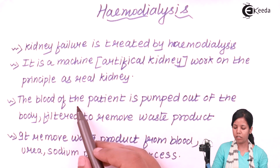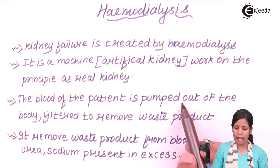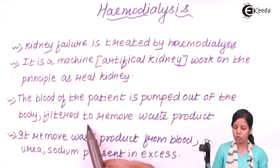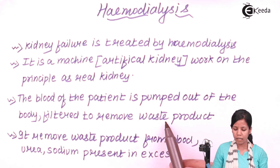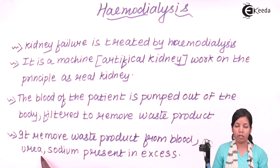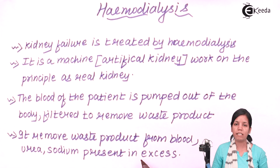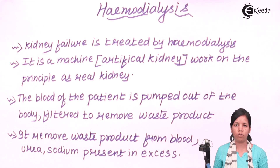The blood of the patient is pumped out of the body and filtered to remove waste products through this machine. It removes waste products from your blood. The waste products may include urea, sodium, and potassium that are present in excess in your blood and are not required by your cells, and they have to be eventually removed.